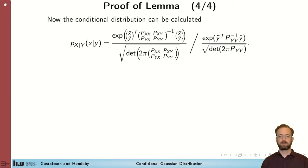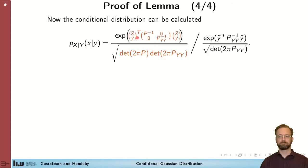Now we're ready to attack the full expression for the conditional distribution. We start by inserting the two things that we have found out so far: the simplified expression for the determinants and for the exponents here. Okay, so this.